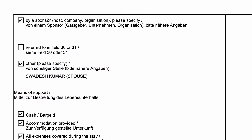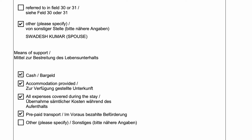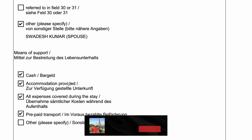One very important thing: if you are applying as a family and you are the head of family, then in the section below field 32, you have to select your wife or children as dependents — by a sponsor. Then you have to click on 'other' and select all options, because you are responsible for their accommodation, expenses, transport, etc. So this is the visa application form step by step.